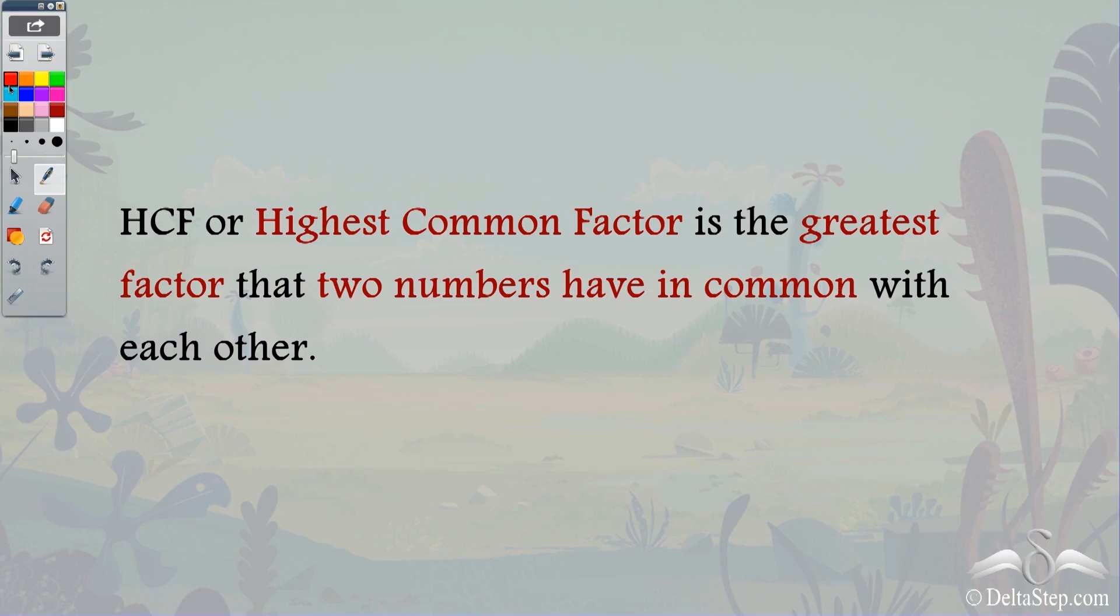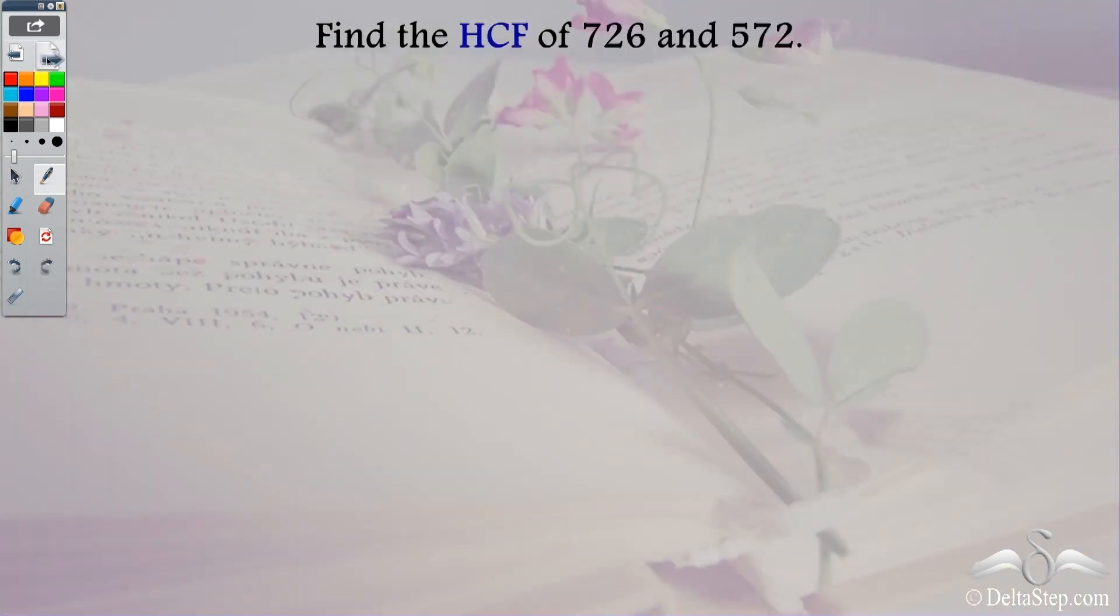We know that the HCF or the highest common factor is the greatest factor that two numbers have in common with each other. So let us find the HCF of these two numbers 726 and 572.